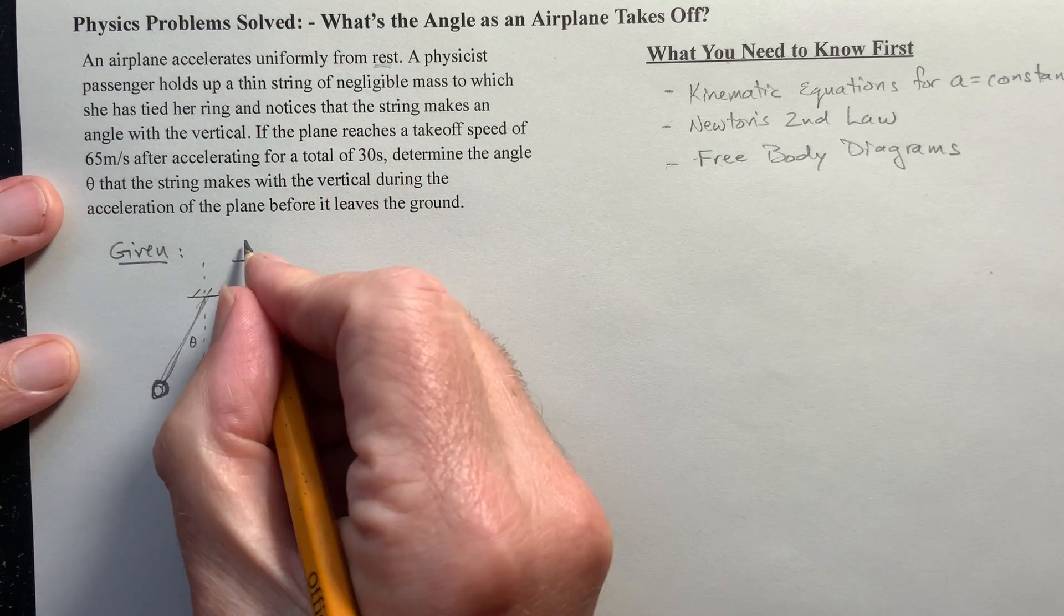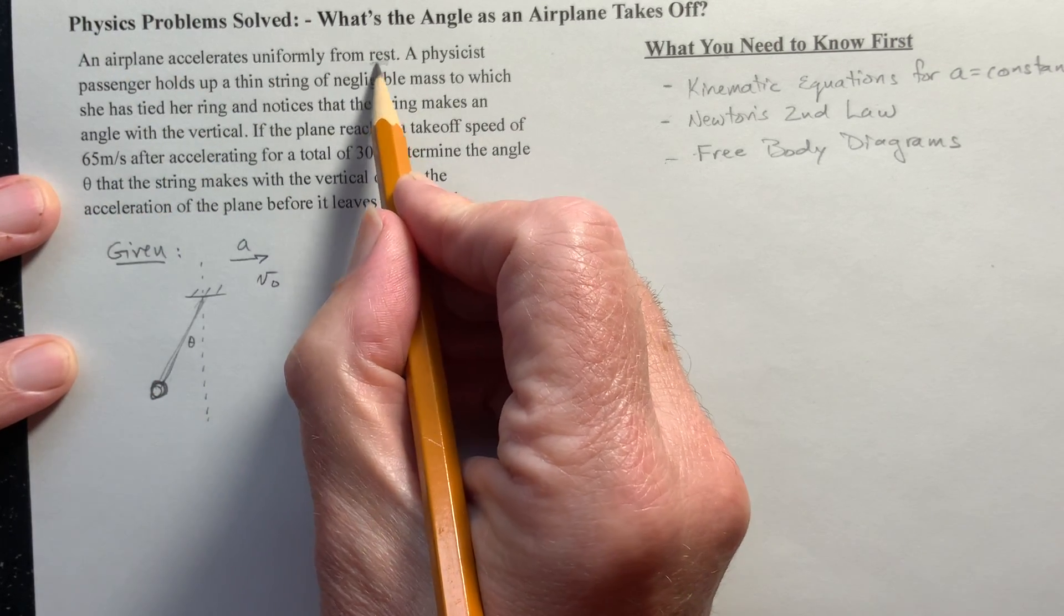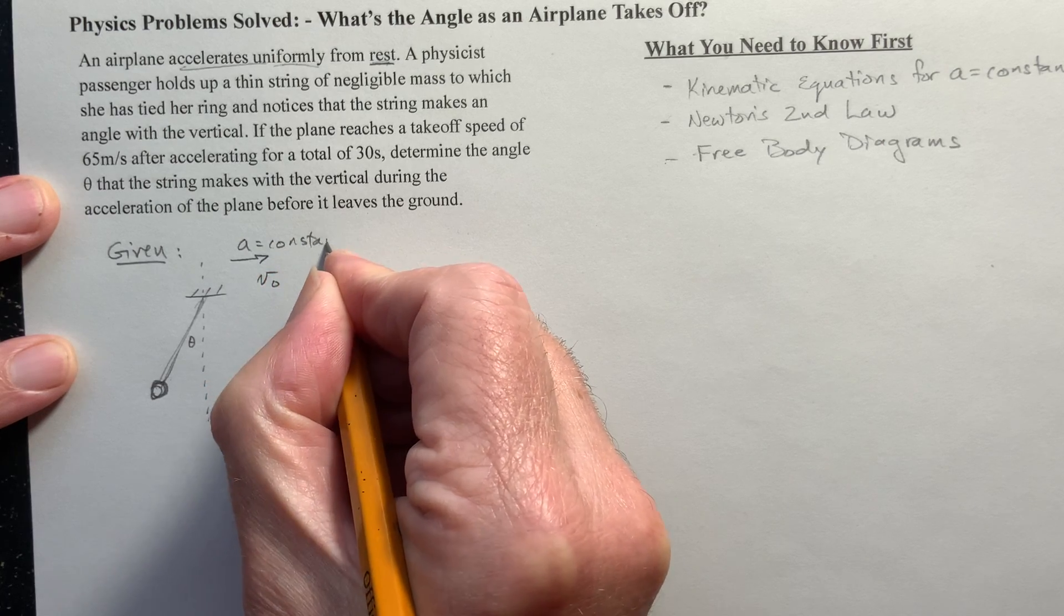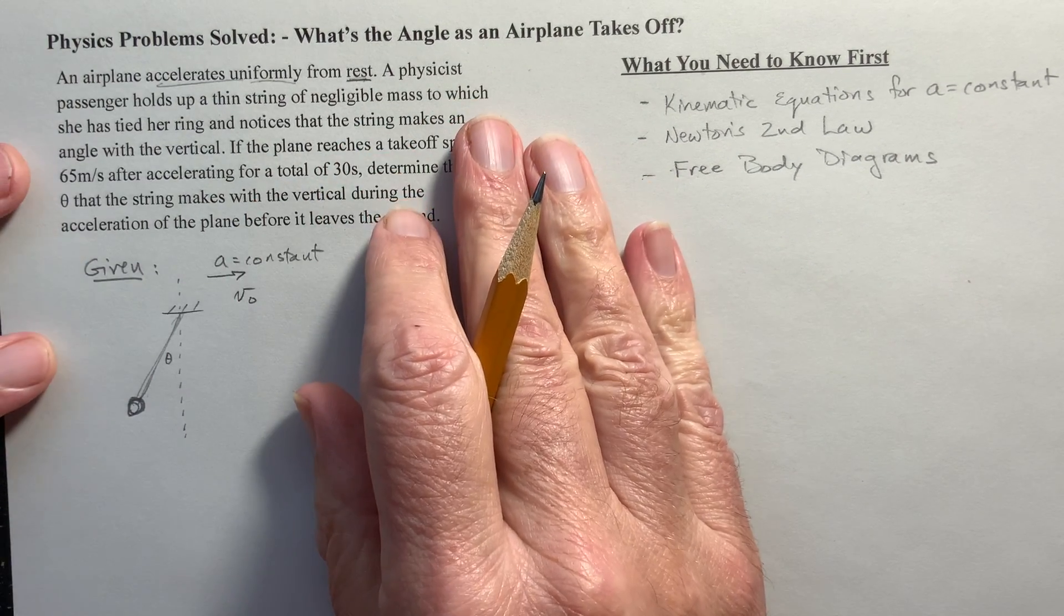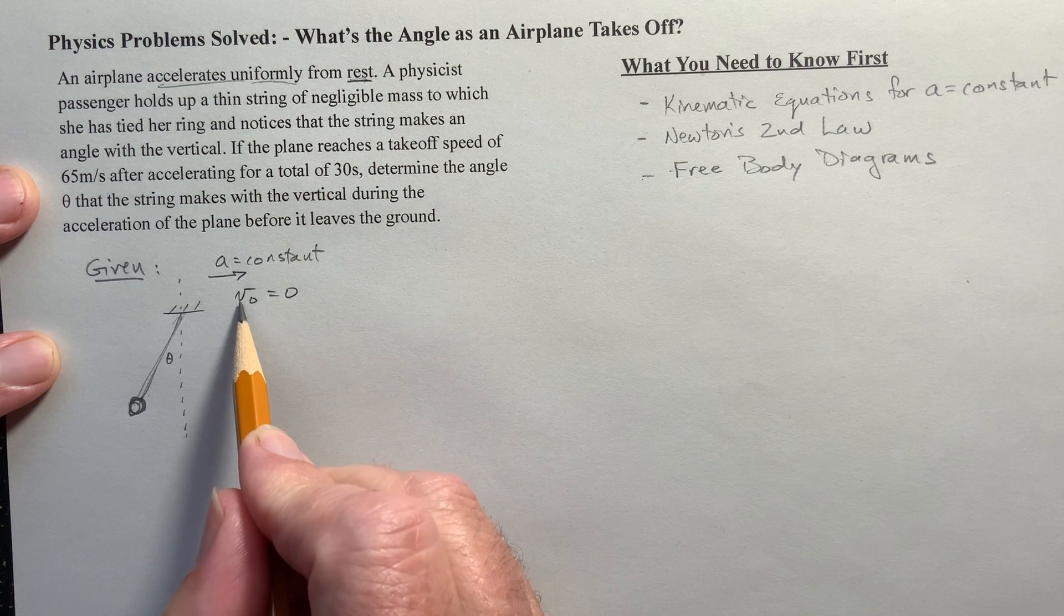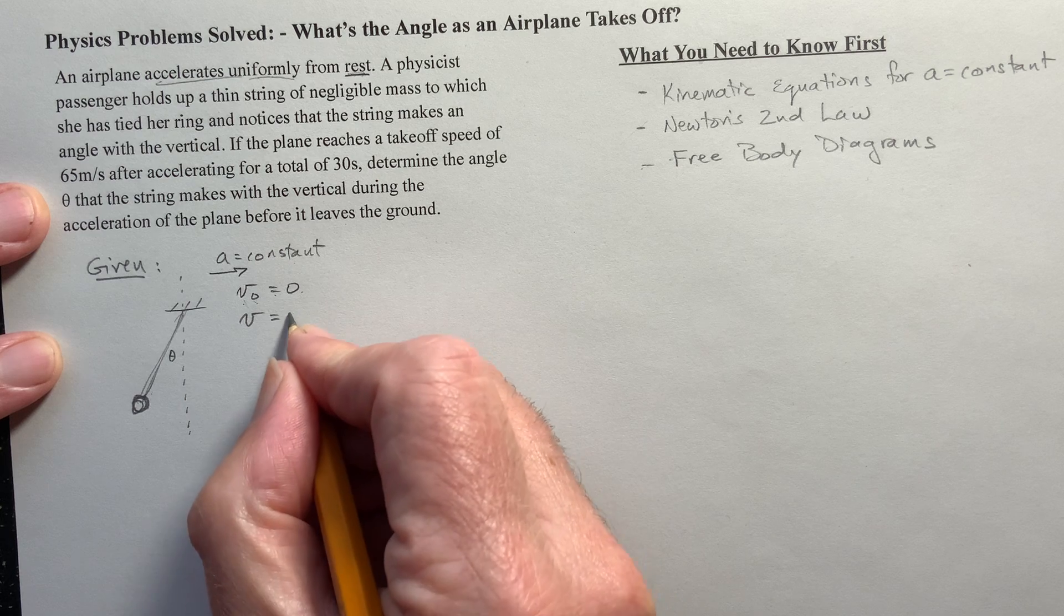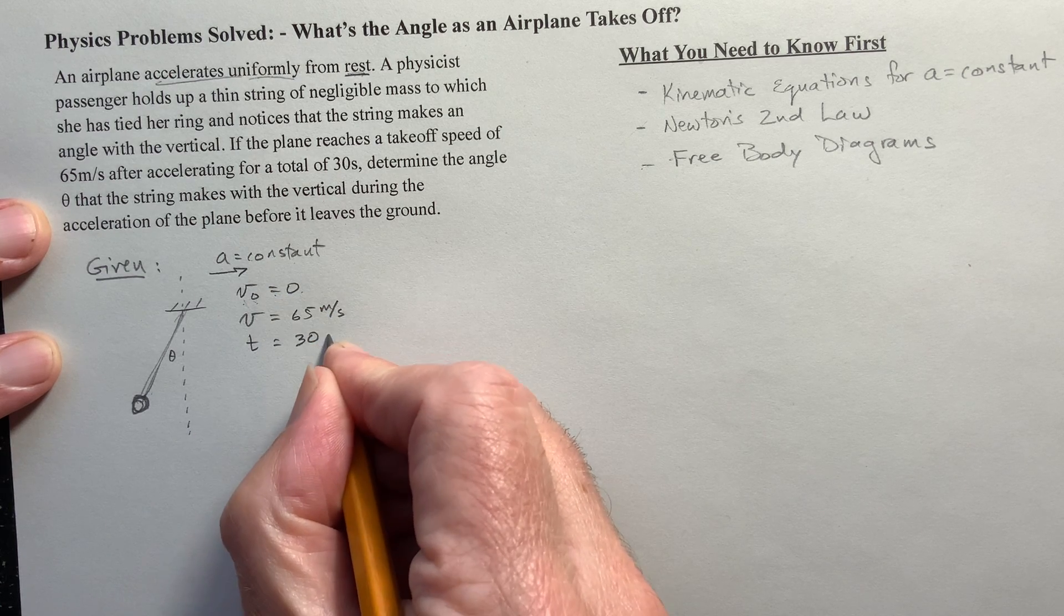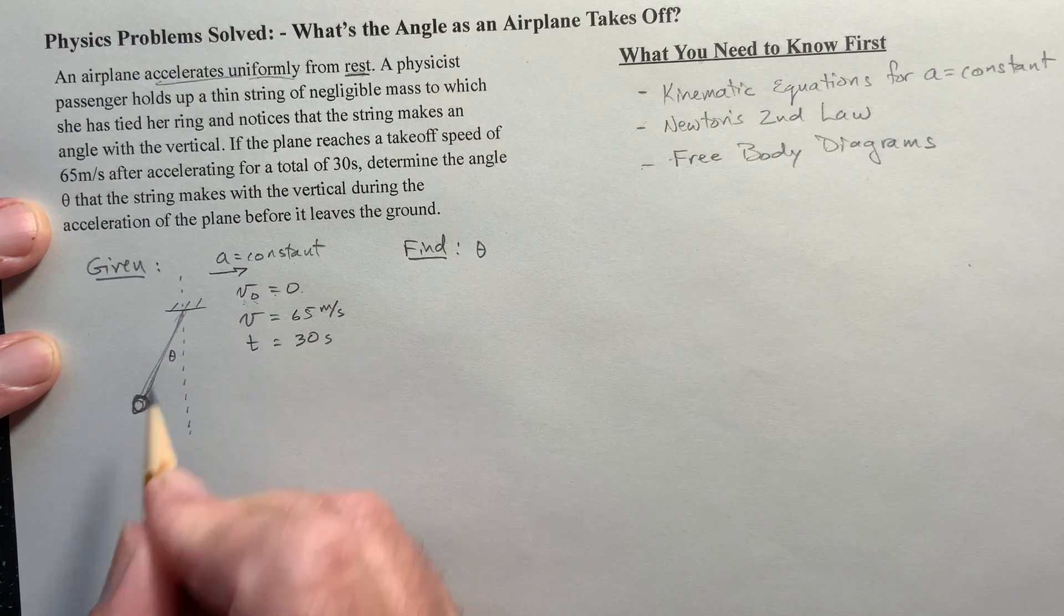Now, I encourage you to try this. Take a ring or some mass with a light string and hold it in a car. Now, don't you be the driver. Somebody else should drive. But just watch it as you accelerate forward or accelerate back or even accelerate to the side by going around a turn. And you will see that as you accelerate, the mass on the string will deviate from the vertical with a certain angle. And if you know this angle, if you put a protractor here, you can even figure out what the acceleration is.